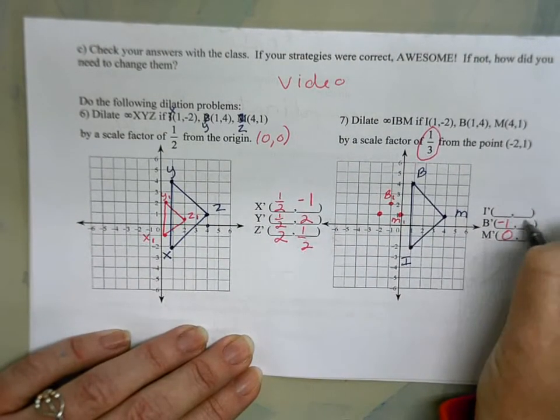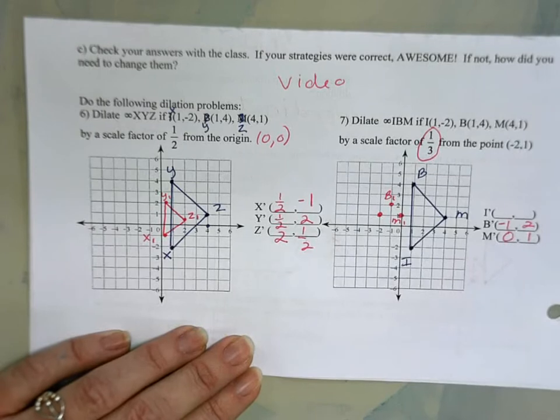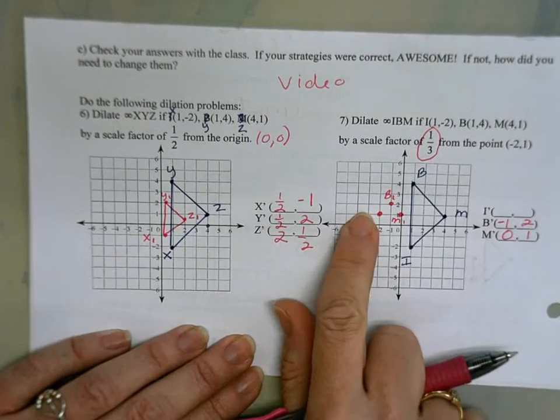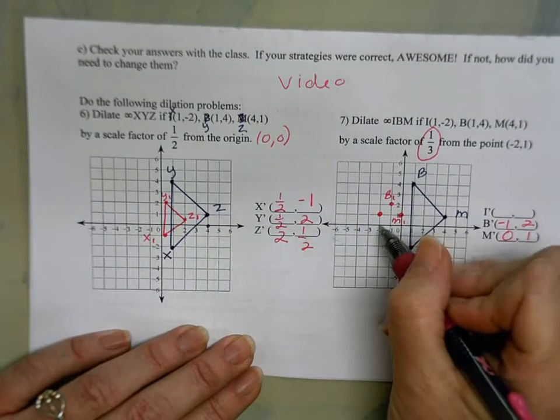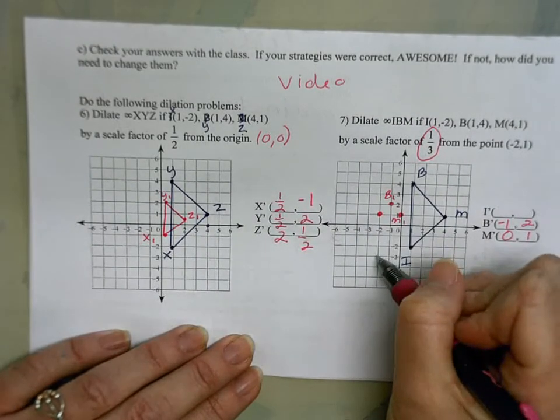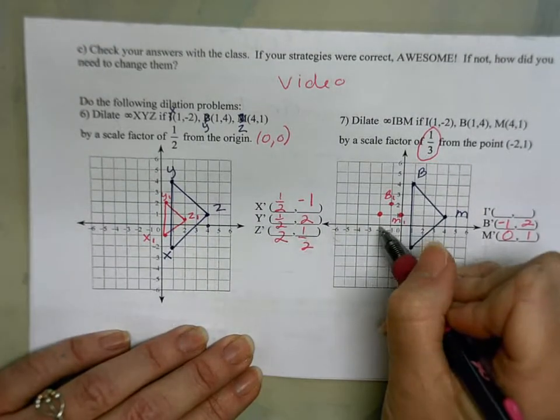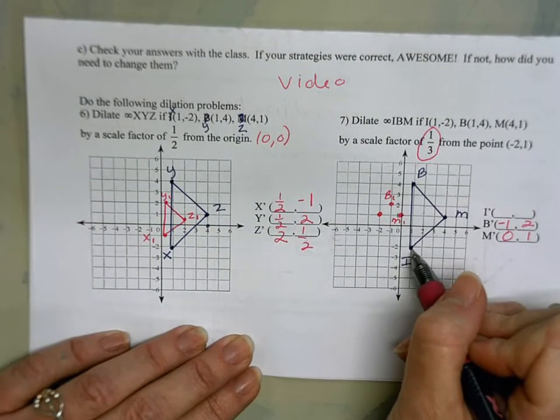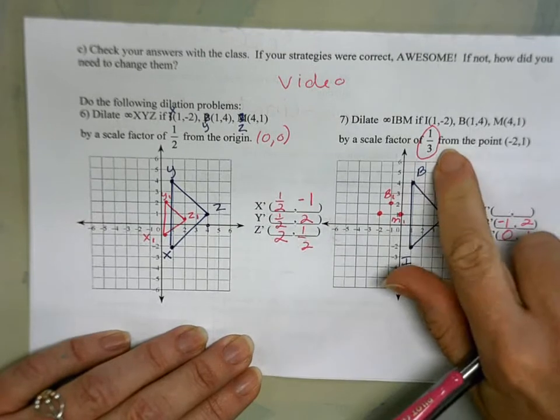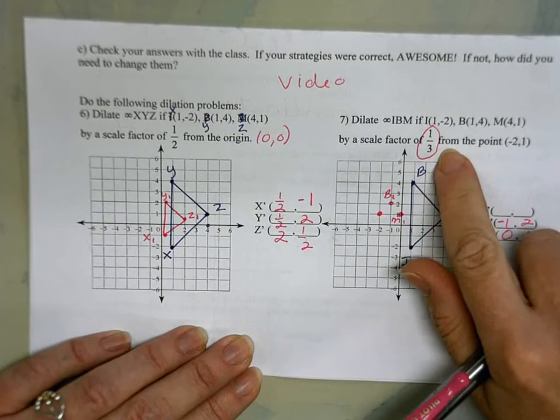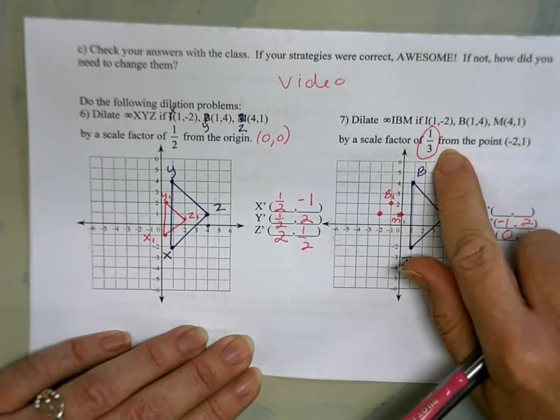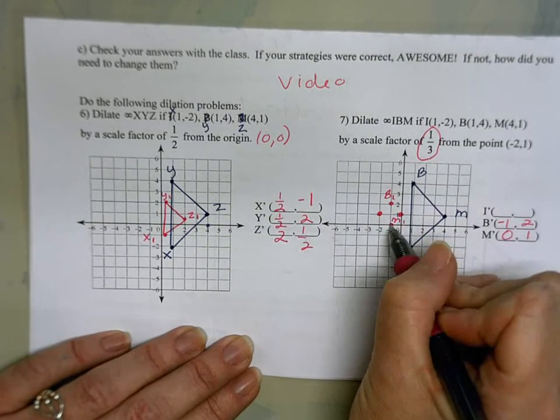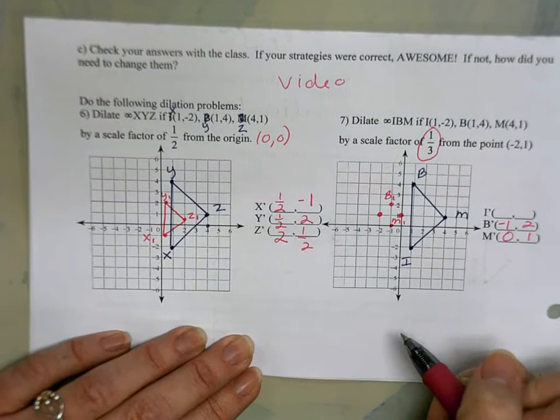And then finally I. To get from my center, my point (-2,1), to I, I'm going down 1, 2, 3—oops, sorry—1, 2, 3, even nicer. And I'm going over 1, 2, 3. I'm gonna take that distance and multiply it by the scale factor 1/3. One third of 3 is again 1, so I'm gonna go down 1 and over 1. And those are my new coordinates for I.